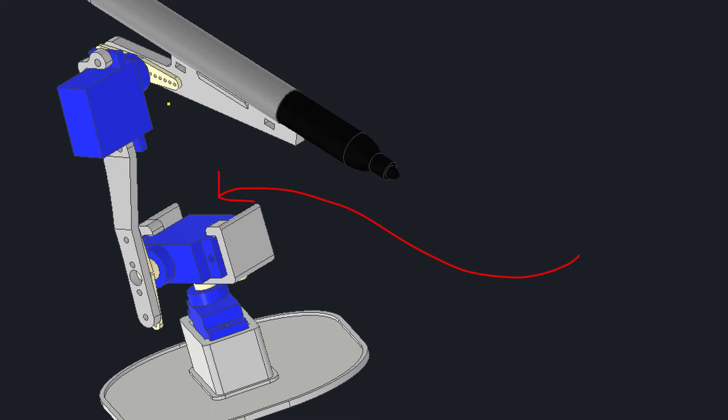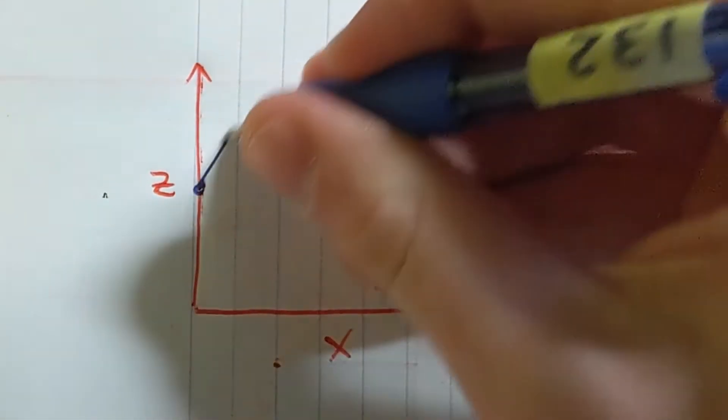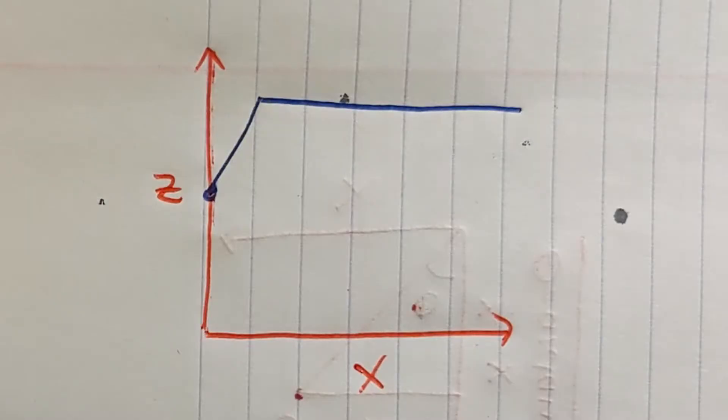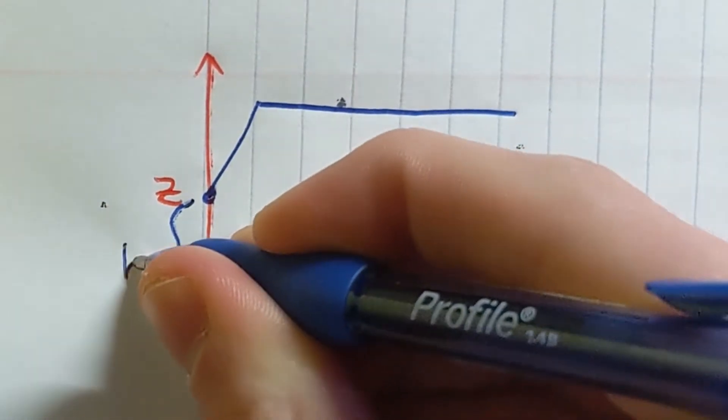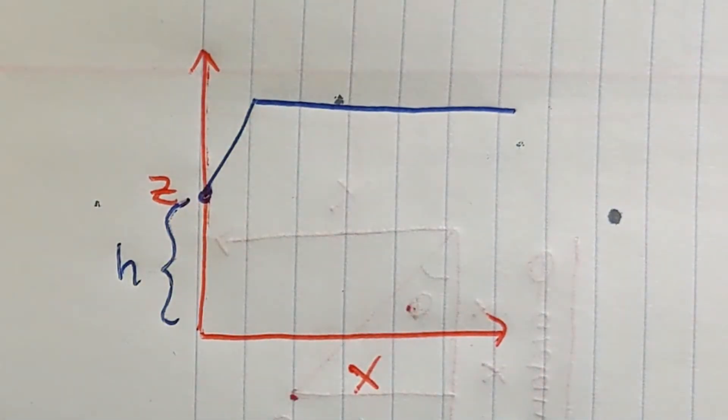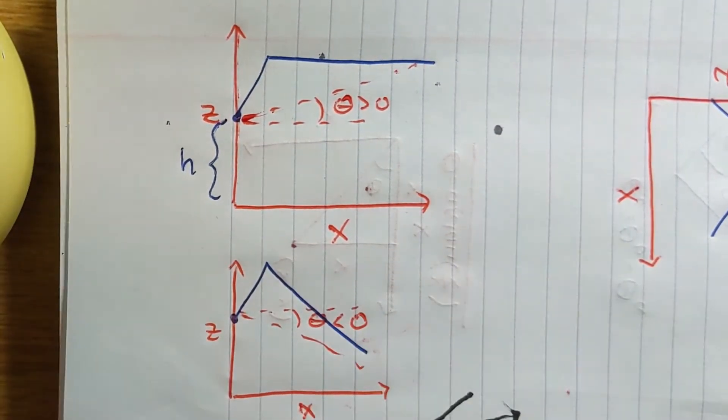The second servo calculated is the first joint. Shown here is a visual representation of the arm on its side. Since the arm doesn't actually rotate on the table, but rather on an elevated small platform, the height needs to be taken into account when calculating the angle of joint 1. There are two geometrical scenarios here. One where joint 1's angle is greater than 0, and one in which joint 1's angle is less than 0.